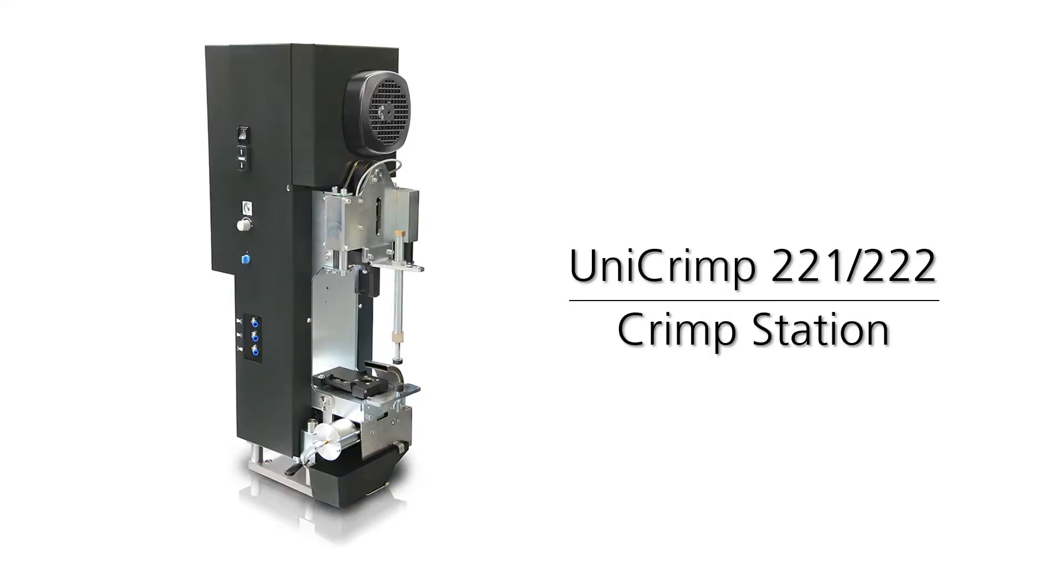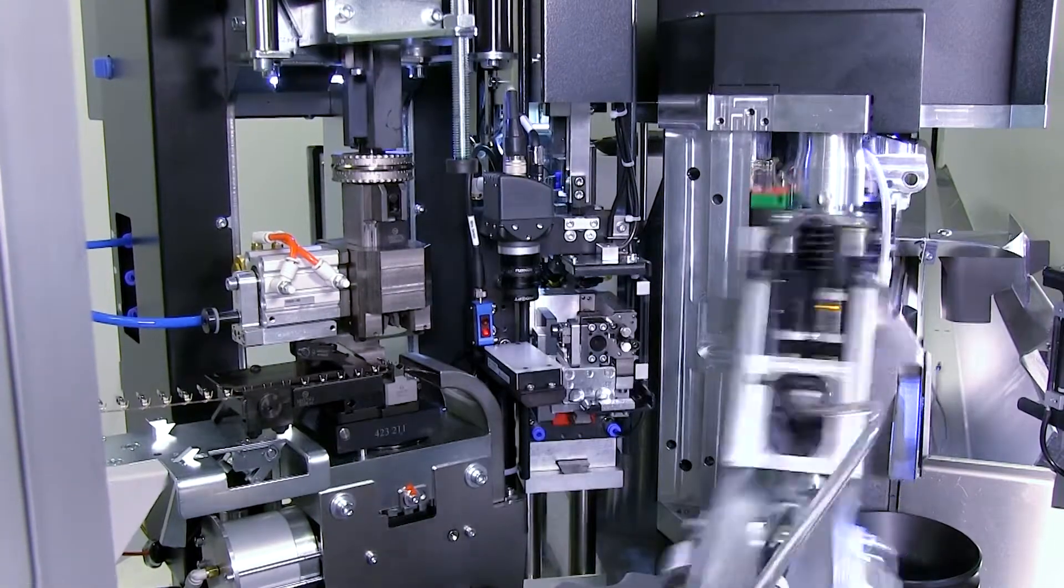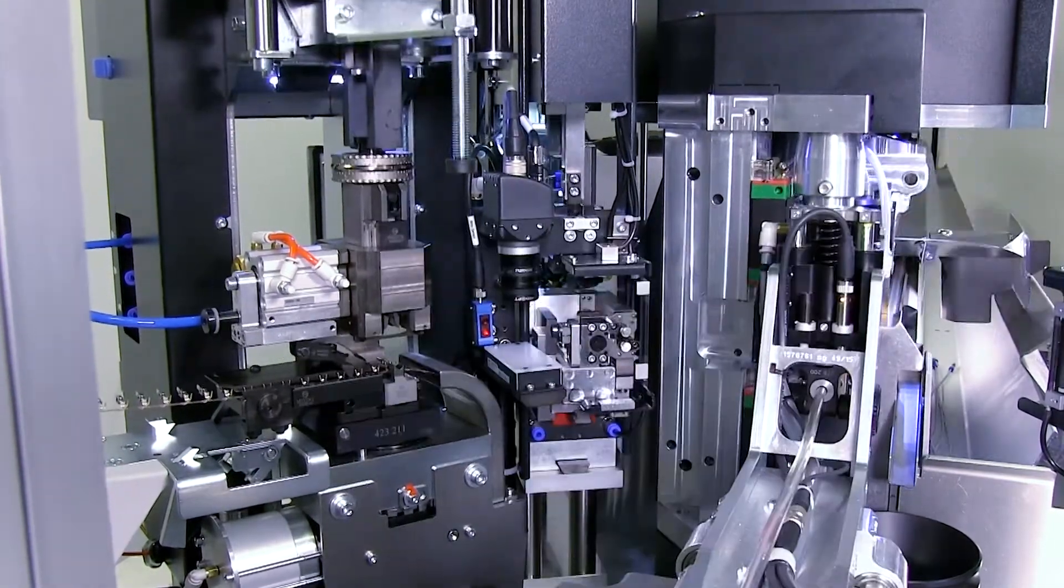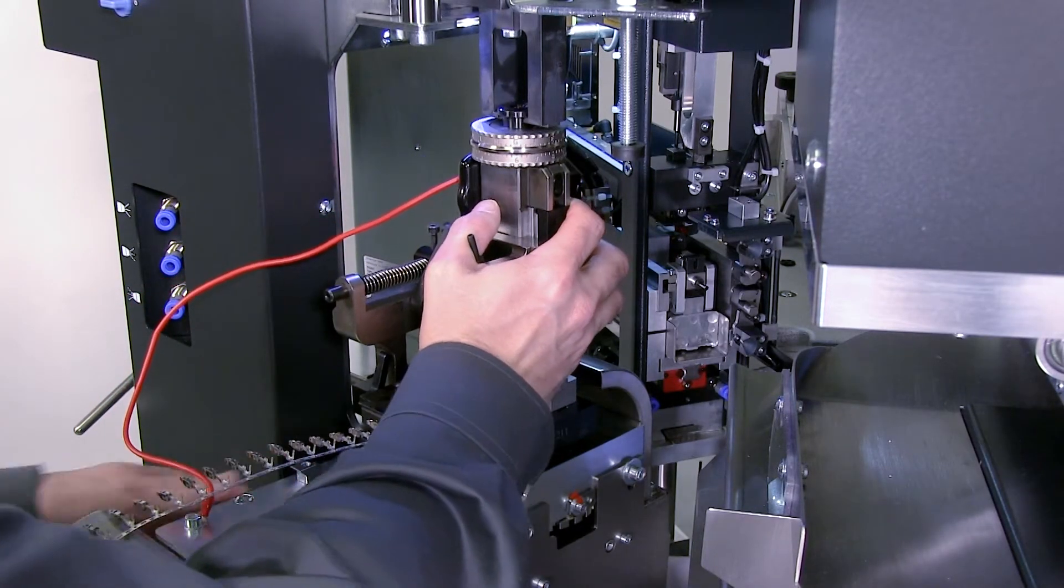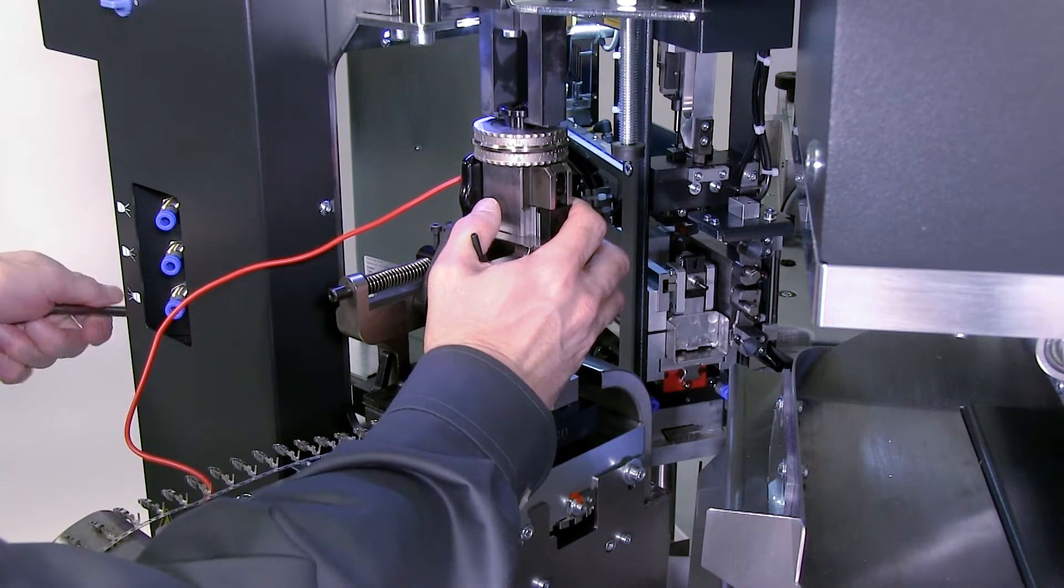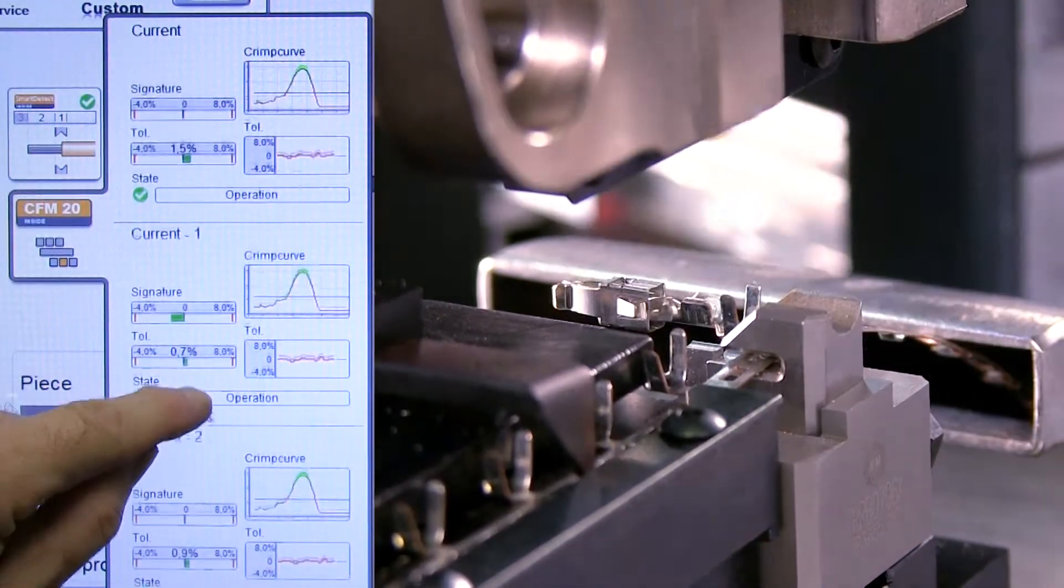The Unicrimp 221 and 222 crimping stations are designed for high-speed production on Crimp Center Series machines. These crimping stations accept most side or rear-feed mini-style crimping applicators with either mechanical or pneumatic feed and include integrated crimp force monitoring with the Schleuniger CFM 20.